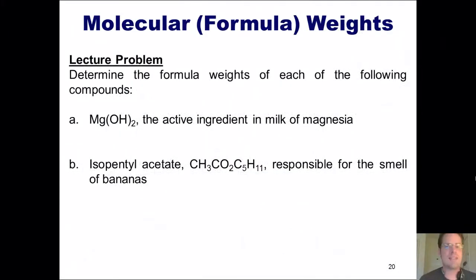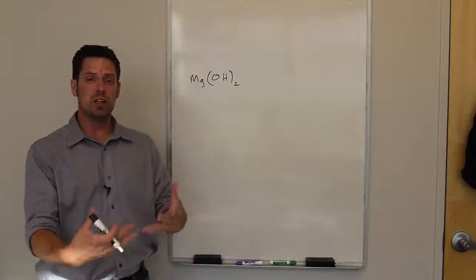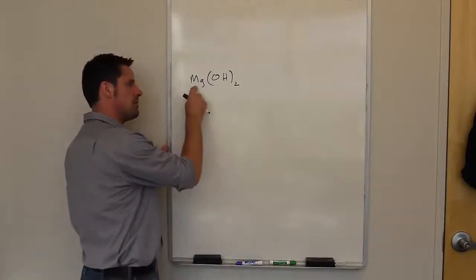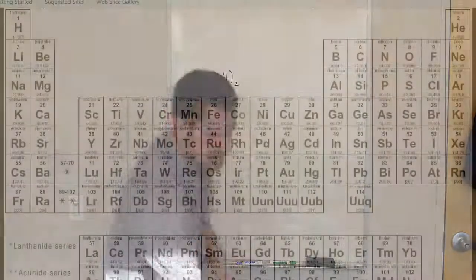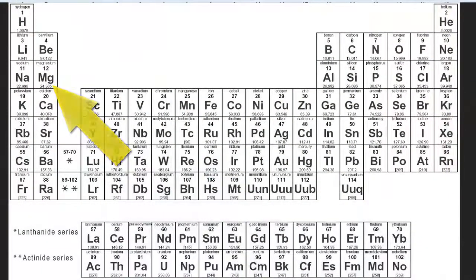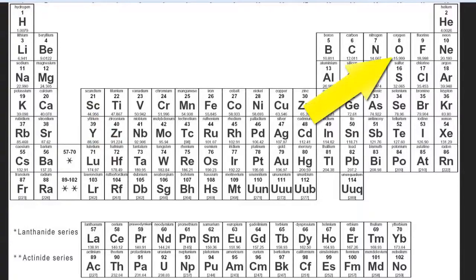Which brings us to some great lecture problems. Determine the formula weights of each of the following compounds: magnesium hydroxide, the active ingredient in milk of magnesia, and isopentyl acetate, responsible for the smell of bananas. I'm going to show you how to do these on the doc cam. To do this first one, we look at the periodic table and determine what the atomic masses are for each of these elements. Magnesium has an atomic mass of 24.31. Oxygen has an atomic mass of 16. And hydrogen has an atomic mass of 1.